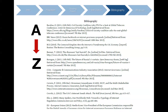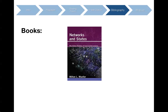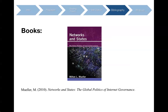Let's review how to cite some of the most common types of sources. First, books. Start with the last name of the author, comma, followed by the initial of the first name. Next, the year the book was published in parentheses. Then the title of the book in italics, followed by the place of publication, colon, and the name of the publisher.